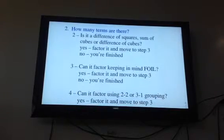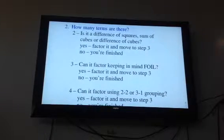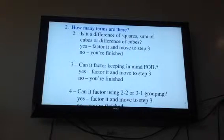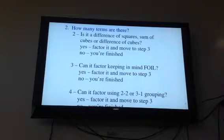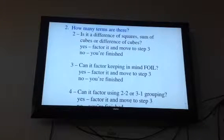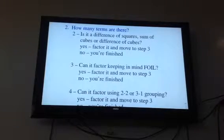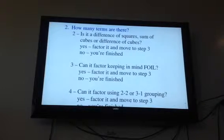How many terms there are then will determine which approach you take to factoring. If there are two terms, that's when you've got to look. Is this a difference of squares? Is this a sum of cubes? Is it a difference of cubes? If it's three terms, that's when you're thinking FOIL, that reverse FOIL, trial and error. And if it's four terms, then you're thinking factoring by grouping, knowing that you have to look at the terms to determine which kind of grouping. So the number of terms in the question determines your approach to the factoring then.